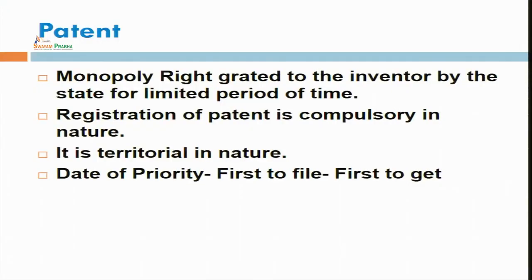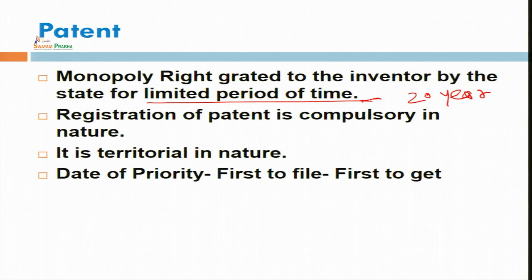Before that, I want to give an overview of patent in one slide. A patent is a monopoly right which is given to the inventor by the government for a limited period of time. That limited period, as we have already discussed, is 20 years. When someone goes for registration, he is entitled to 20 years of monopoly rights.